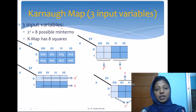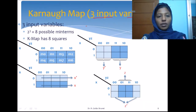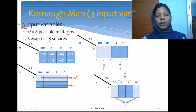Now, let us consider how to use the Karnaugh map when the Boolean expression has 3 input variables. When the number of input variables is 3, we have 8 possible minterms. So, the size of the Karnaugh map will be 8 squares. This is the 3-variable Karnaugh map.